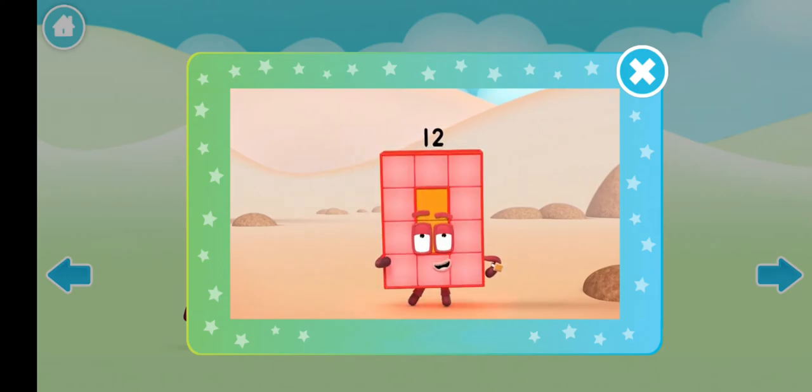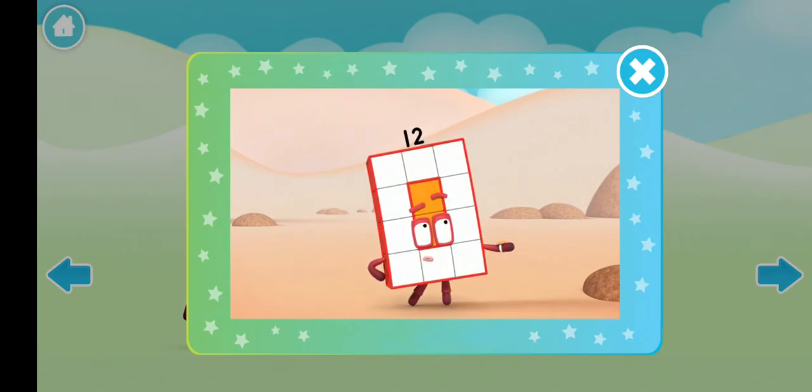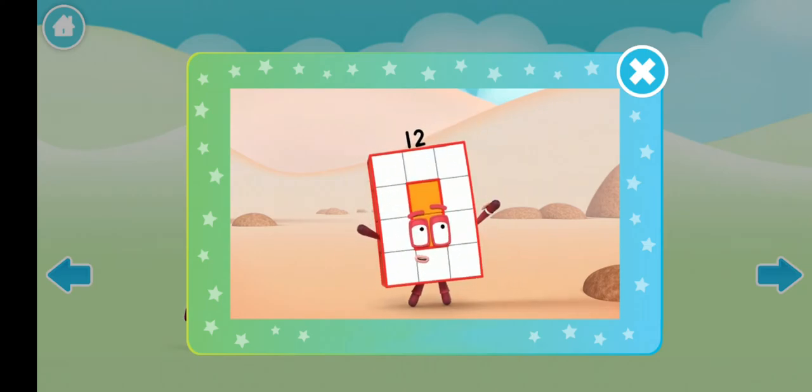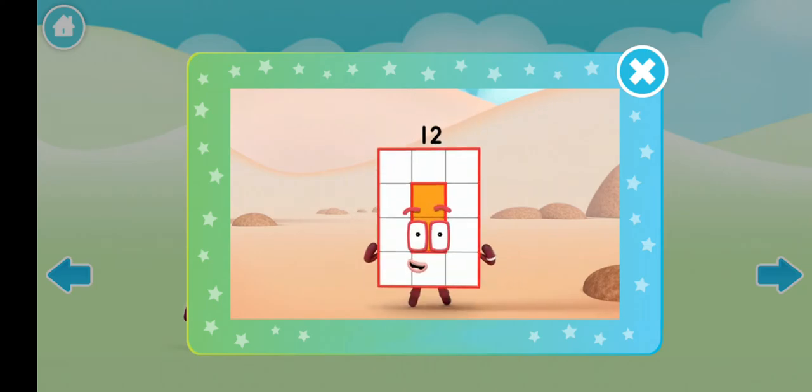I'm rectangular twelve, I'm ten and two, I make arrays, that's what I do! When I put my blocks in columns and rows, I make an array and my rectangle goes like this!